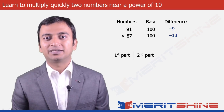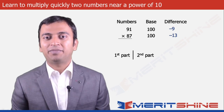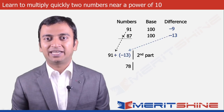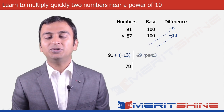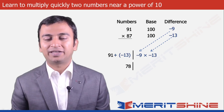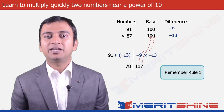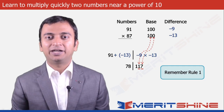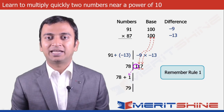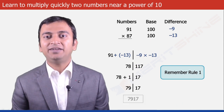We can now proceed to write down our answer which would again be in two parts. The first part would be 91 added to the difference from the second, which is minus 13, giving us 78. The second part would be the product of the differences, which is minus 9 into minus 13, giving us 117. The number of digits in the second part must equal the number of zeros in our base, which is 2. So 1 has to be carried over to the first part, making 78 become 79, and we will be left with 17 in the second part. Clubbing these two we get our final answer as 7917.